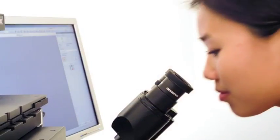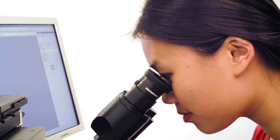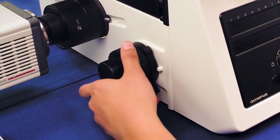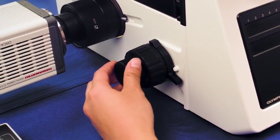Common to all IX-73 models, the pre-focusing lever, when engaged, prevents coarse focusing above the desired focal point and reduces unwanted collision of the objective lens with the sample.